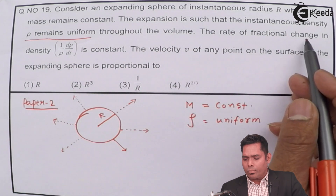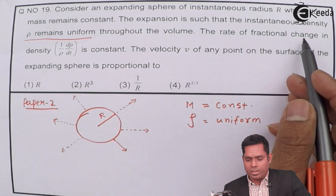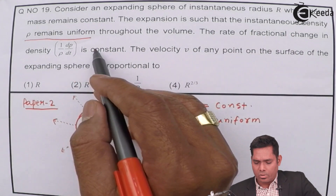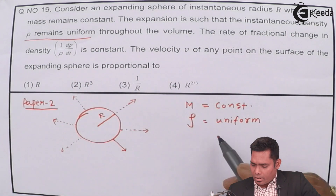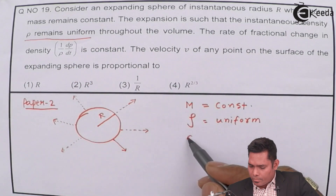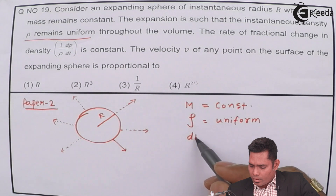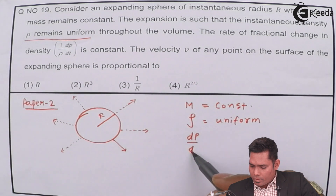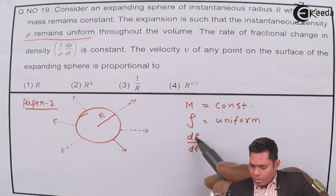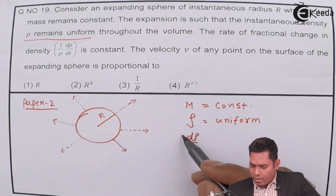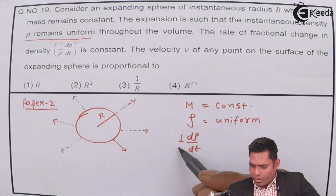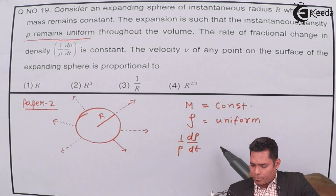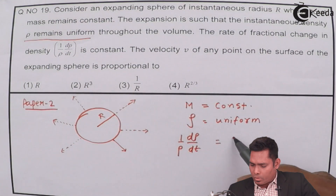The rate of fractional change in density is constant — that is, (1/ρ)(dρ/dt) is also a constant.